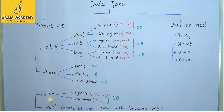Let us move to the third data type: character data type. There are two types — signed character and unsigned character. The keyword used is char, signed char, and unsigned char. Both signed and unsigned character data types consume one byte in memory. If we do not want to restrict to positive only, we just write the keyword char, and it is understood to be a signed character supporting both positive and negative character values.